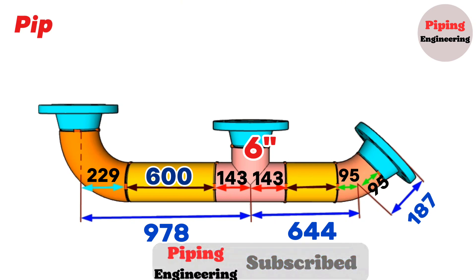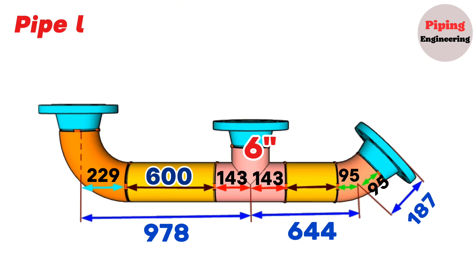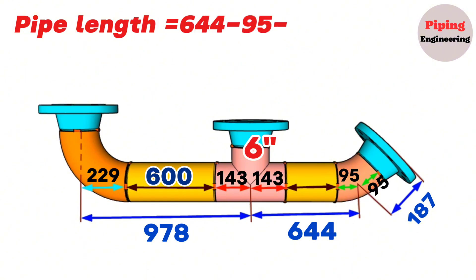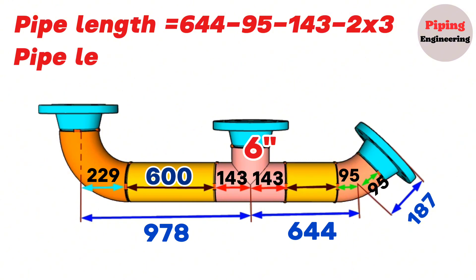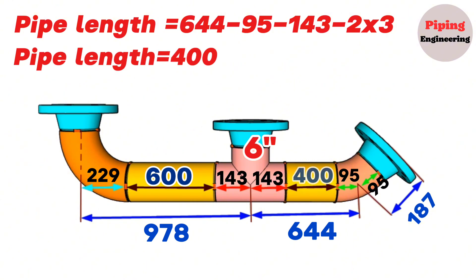Pipe length equals the total length 644, minus the 6-inch 45-degree elbow length 95, minus the 6-inch equal T center to N dimension 143, and minus 2 times 3 millimeters gap for welding. We calculate and find that the second yellow color pipe length equals 400 millimeters.